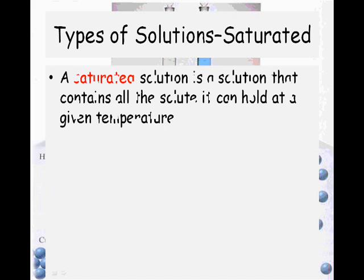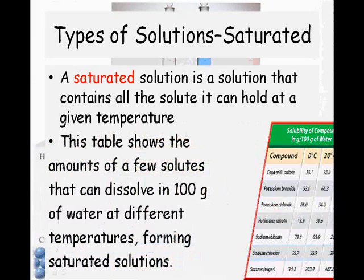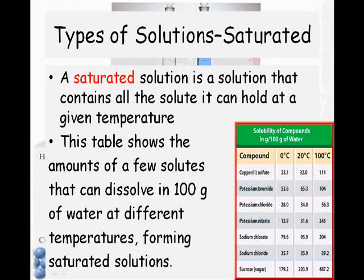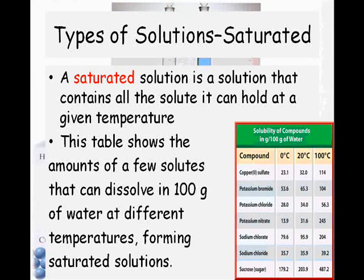Now, types of solutions — this is talking about concentrations. A saturated solution is a solution that contains all the solute it can hold at a given temperature, meaning everything has dissolved and it can't hold any more solute. This table shows the amounts of a few solutes that can dissolve in 100 grams of water at different temperatures. For example, copper sulfate: at 0°C you can dissolve 23.1 grams, at 20°C you can dissolve 32 grams, and at 100°C you can dissolve 114 grams.